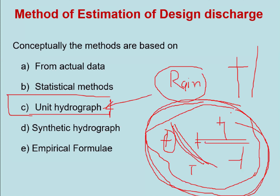There are also empirical formulas. In Indian Railways, the RVF-16 method is used, which is applicable for small catchment areas. If the catchment area is less than 25 square kilometers, this empirical formula can be used for working out the design discharge. When the catchment area is large, we must go for the synthetic hydrograph method.